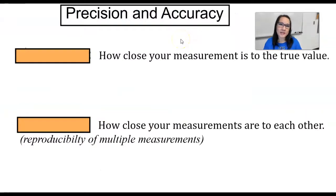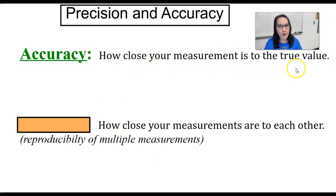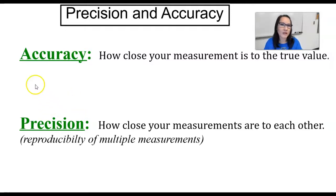Now let's talk about precision and accuracy. Accuracy is going to be how close your measurement is to the true value. Precision is how close your measurements are to each other — the reproducibility of multiple measurements.